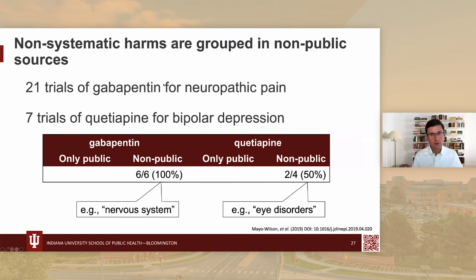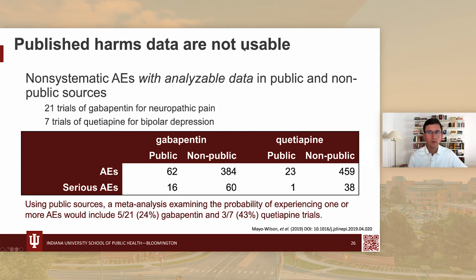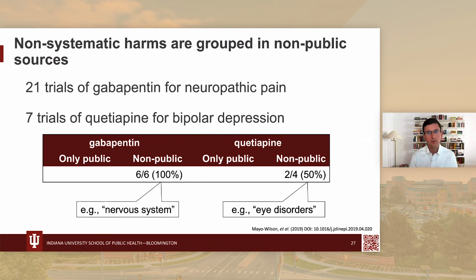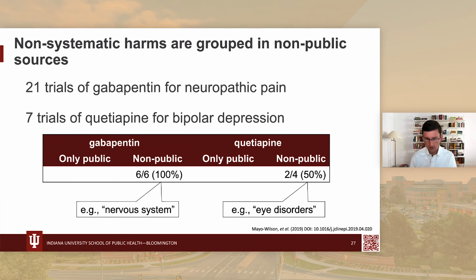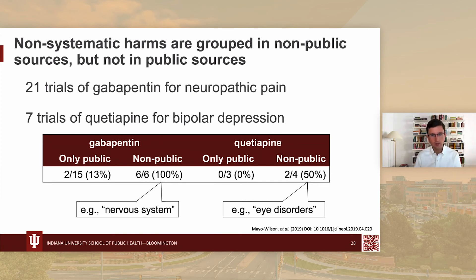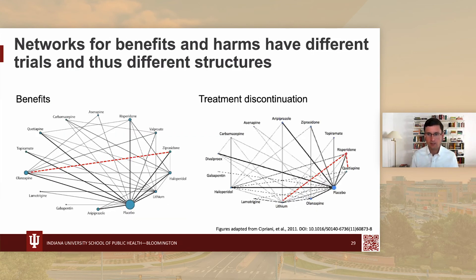Non-systematic harms are often grouped in non-public sources. In our 21 gabapentin trials for neuropathic pain and 7 quetiapine trials for bipolar depression, all gabapentin trials reported harms grouped according to higher MedDRA categories, and 2 out of 4 quetiapine trials showed harms grouped and analyzed that way as well. But in only 2 out of 15 published gabapentin trials did we see grouping at those levels, and in zero out of 3 published quetiapine trials. So this grouping is being done in many cases, but it's not being published.